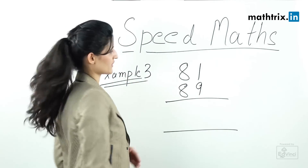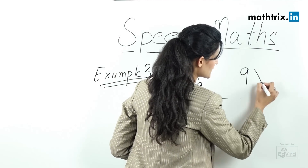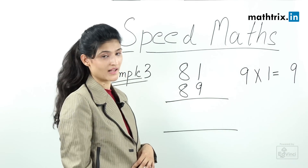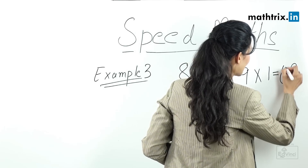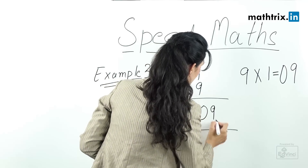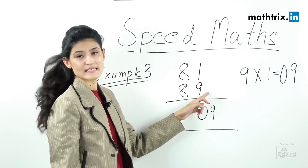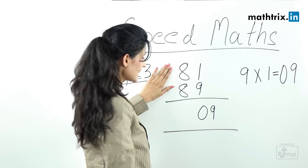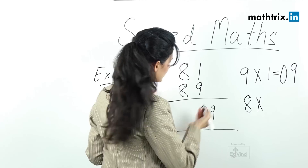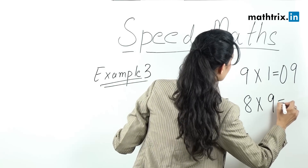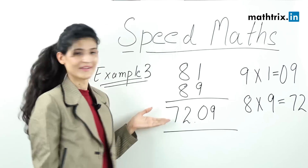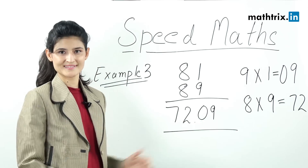For 81 × 89, step 1: multiply the unit digits, 9 × 1 = 9. Since this is a single digit, we write it as 09 to fill the last two digit places. Step 2: take 8 and multiply by the next integer, 9 — so 8 × 9 = 72. Placing 72 in front gives us the answer 7209.